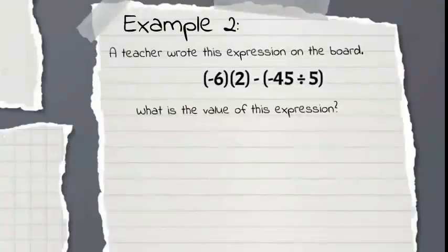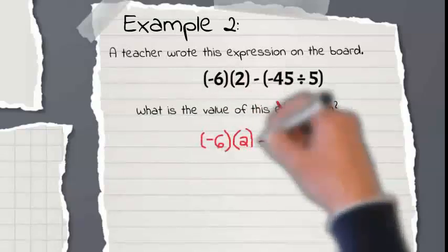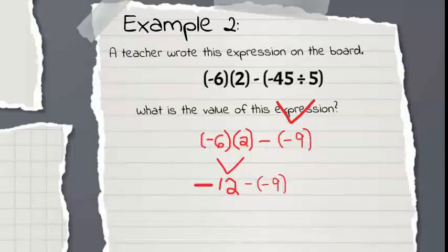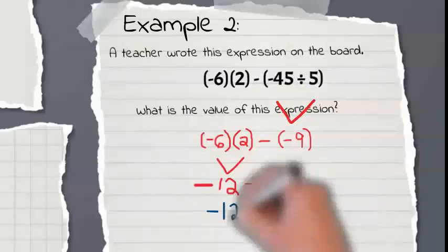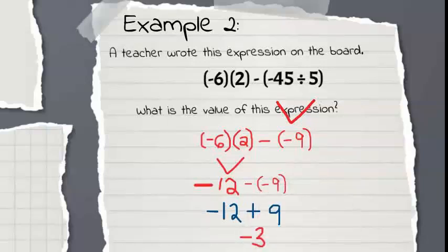Let's try another one. Example 2: A teacher wrote this expression on the board. What is the value of this expression? We want to start in the parentheses: negative 45 divided by 5. 45 divided by 5 is 9, and they have different signs, so our answer is negative. Now, negative 6 times 2: 6 times 2 is 12, and our signs are different, so our answer is negative. We get negative 12 minus negative 9. Keep negative 12, change subtraction to addition, and change negative 9 to positive. Different signs — so 12 minus 9 equals 3, and negative 12 has a larger absolute value, so our answer is negative 3.